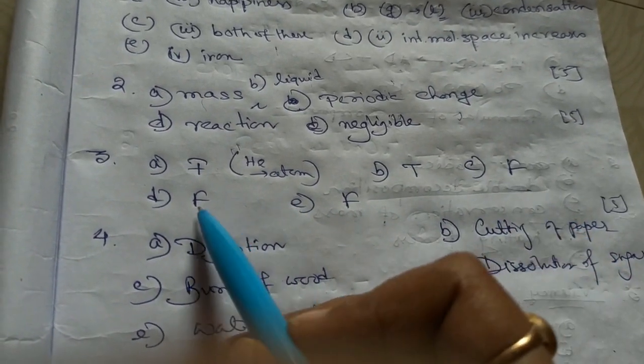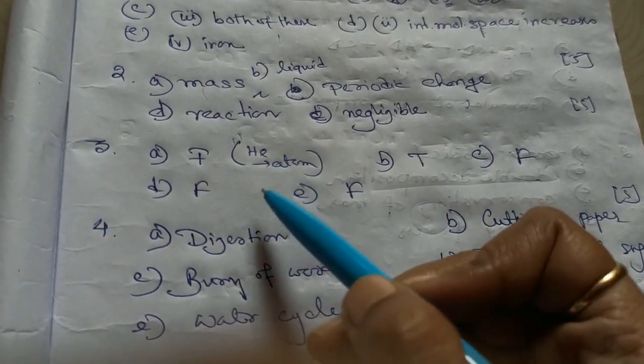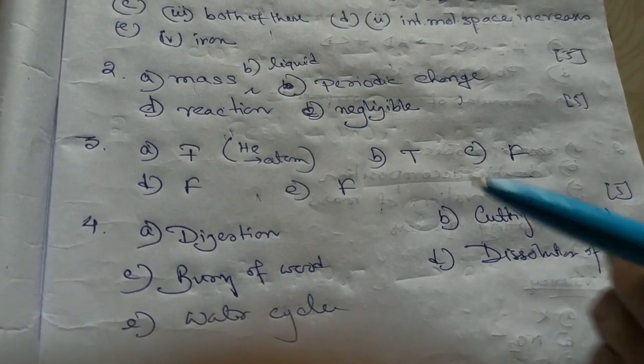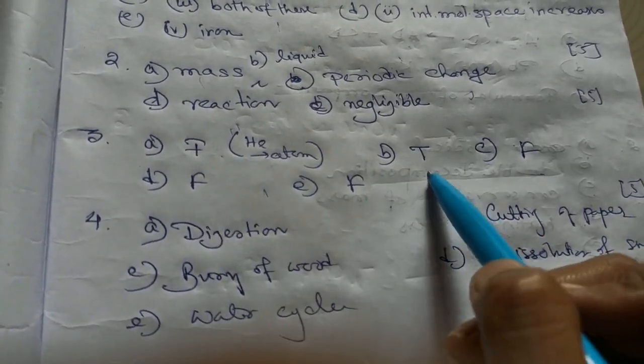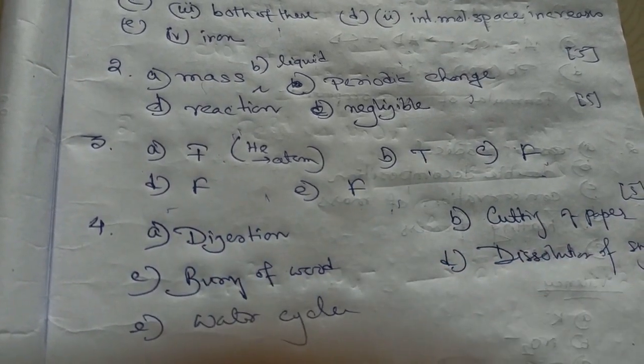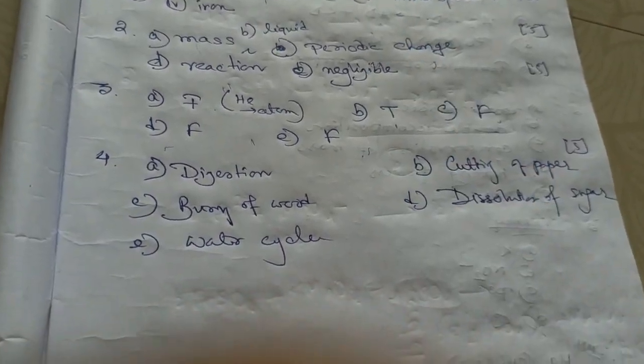Next is true, false. The first question was the basic unit of helium is molecule. We have already done helium or all the noble gases. They are made up of atoms. So false, then true, false, false and false. These are the answers. So each question of these all carry one mark.